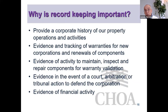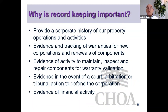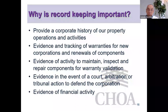Evidence of activity to maintain, inspect, and repair components for warranty validation is critical. Under the Homeowner Protection Act, new home warranties are 18 months for all components, five years for the building envelope, and 10 years for the structure. The strata corporation has a duty to maintain, inspect, and report when a potential warranty claim occurs — that report goes to the warranty provider. A claim is only valid if reported to the warranty provider, and you'll want evidence that your strata has been maintaining and inspecting components.